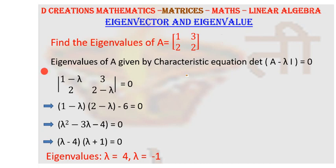And we know now that eigenvalues of this particular matrix will be given by the characteristic equation, determinant of A minus lambda I is equal to 0. Now since this is a 2 by 2 matrix, I is also of the order 2.